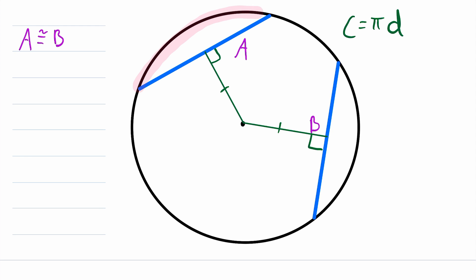Another interesting thing is that since the chords are congruent, these minor arcs that they cut are also congruent. So the length of this arc is the same as the length of that arc. And the same goes for their major arcs. The chord A cuts this major arc and the chord B cuts this major arc. Of course they overlap quite a bit, but those arcs are congruent.